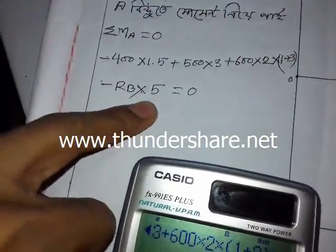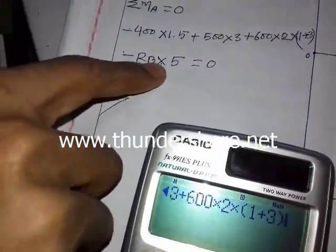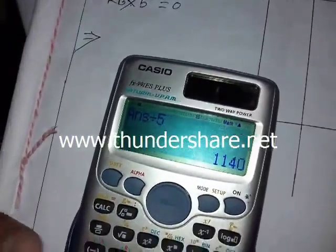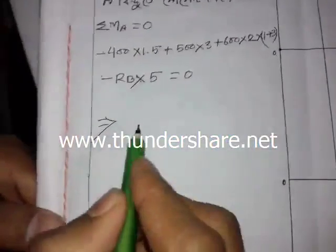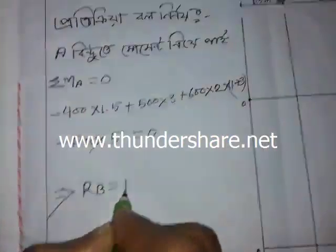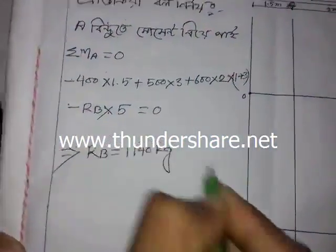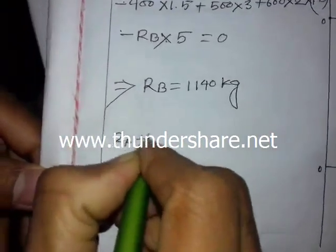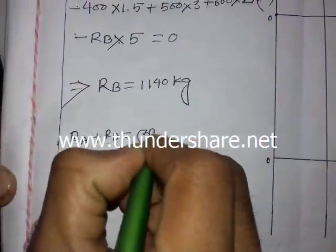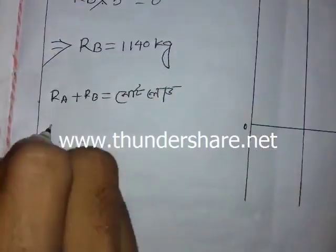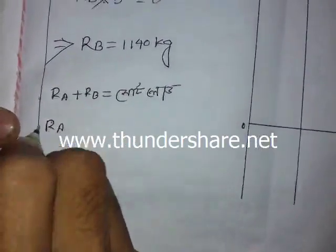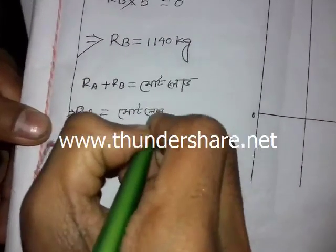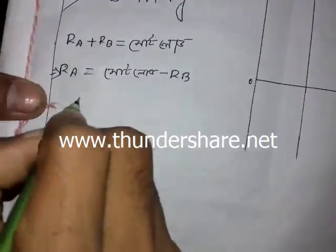Do we understand? Number 1 is squared. Equations: 1.60, 4.60, 1.60. The number 1 is squared. RB is the main value. Mot, load, R E equal to, R E equal to mot load, mot load minus RB.